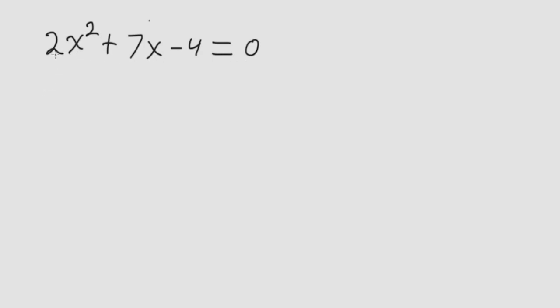To do that, first I need to change the coefficient of the x squared term to a 1. So I'll divide everything here by 2. And this becomes x squared plus 7 halves x minus 2 is equal to 0.